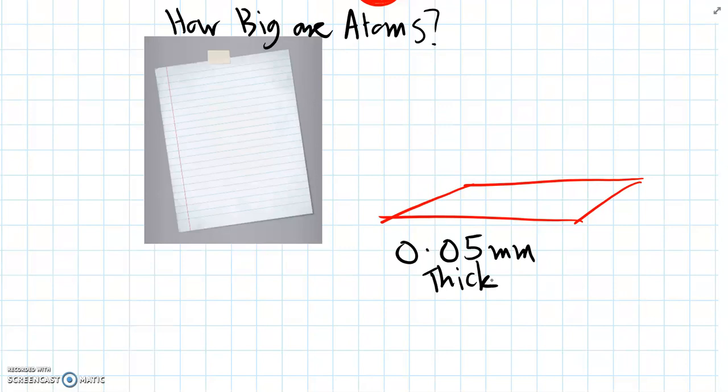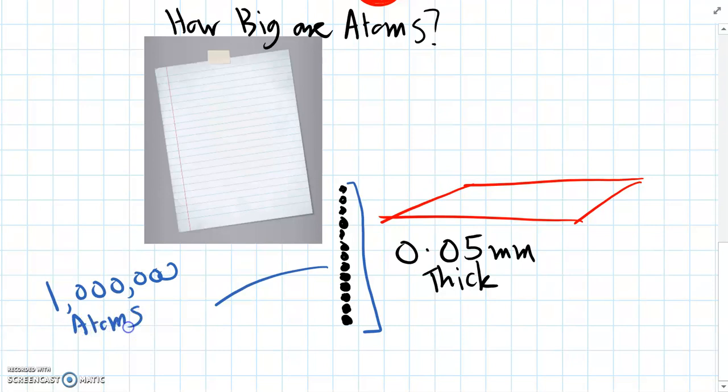But atoms, if we took atoms and stacked them on top of each other, just if we could actually do this, we would have to stack up a million atoms just to make the thickness of one sheet of paper. So 1 million atoms stacked up only equals 0.05 millimetres, the thickness of paper.